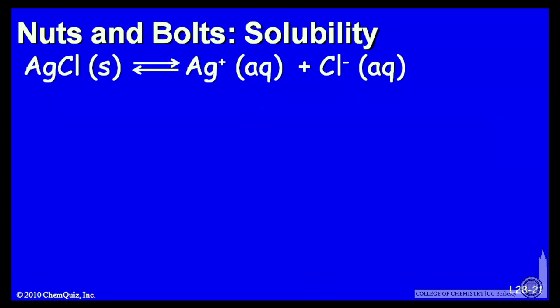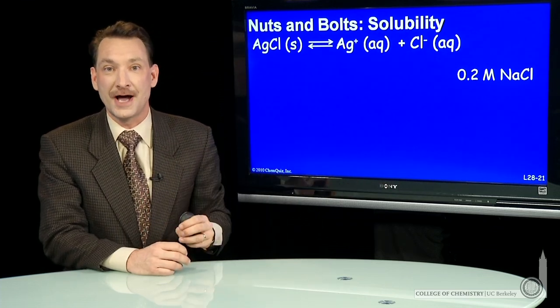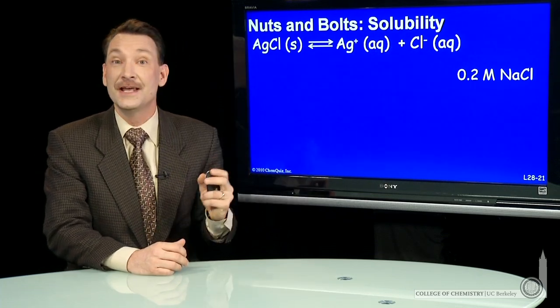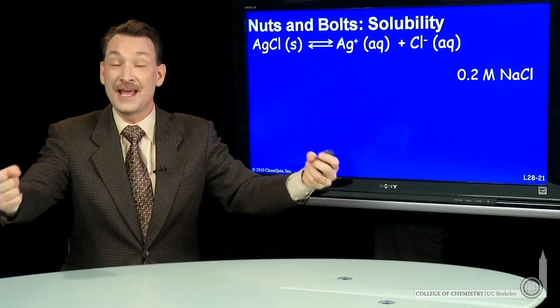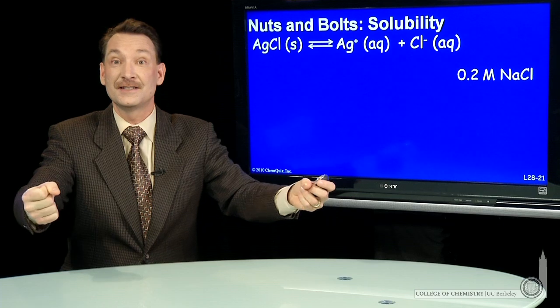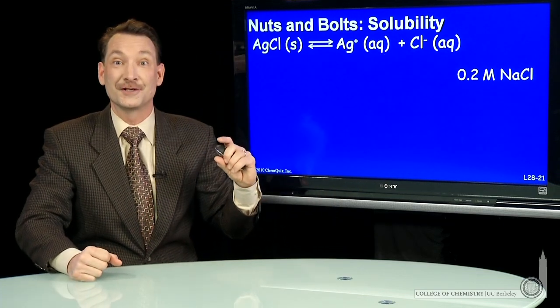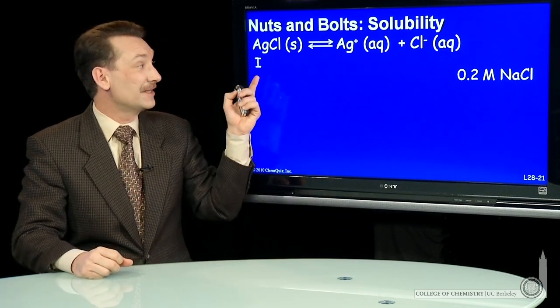How about we dissolve silver chloride in 0.2 molar sodium chloride? So if we have 0.2 molar sodium chloride, then there's already 0.2 molar sodium ions and 0.2 molar chloride ions in solution. The sodium ions don't do anything. They're not involved in this equilibrium. But when silver and chloride ions are together in solution, they tend to precipitate to form silver chloride. So let's see that happening.